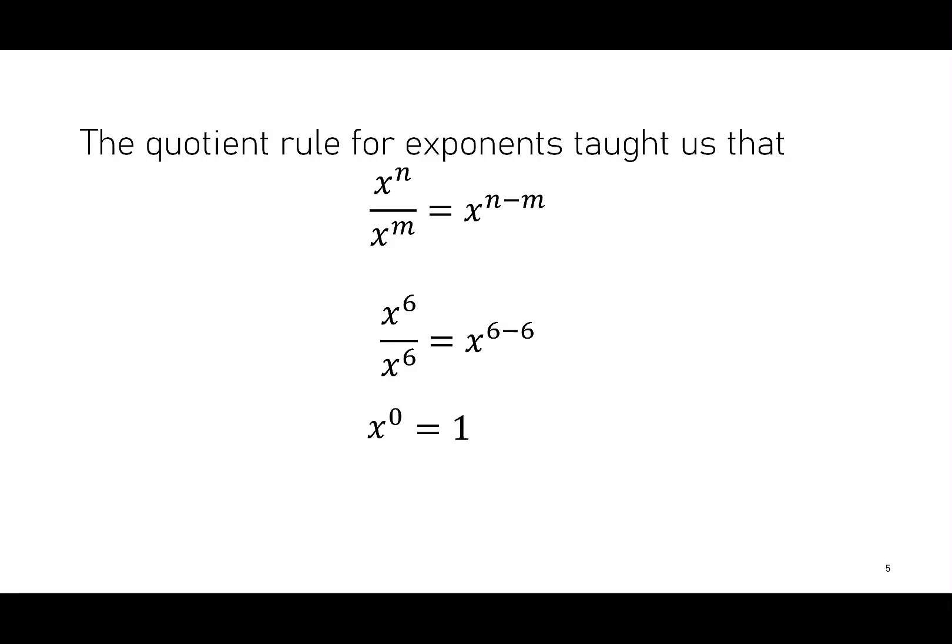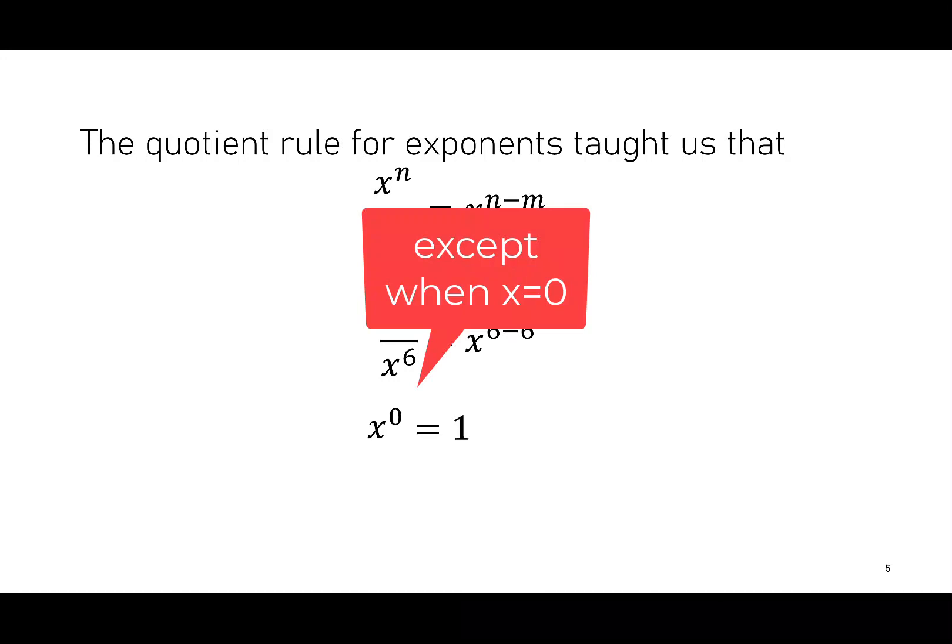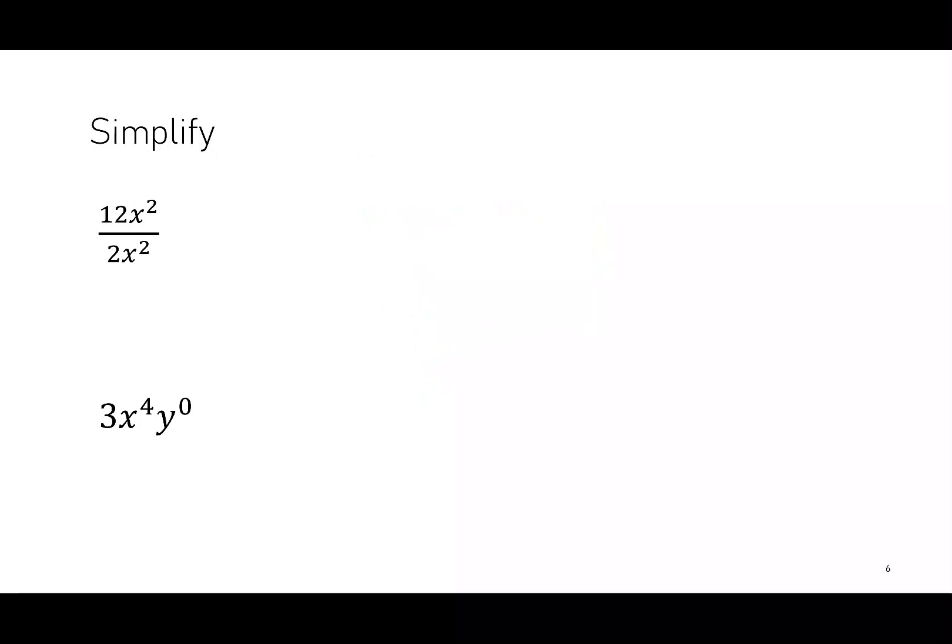There is one exception to this rule. If x was equal to 0, we don't say 0 to the 0 is equal to 1. We say 0 to the 0 is undefined. But let's get back to our rule.